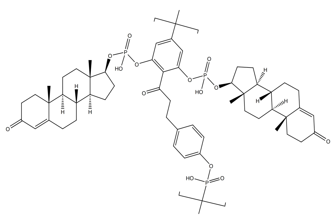Polytestosterone fluorotin phosphate is an androgen and anabolic steroid as well as an androgen ester which was never marketed. It is an ester of testosterone with phosphoric acid that is in the form of a polymer and is coupled with fluorotin.